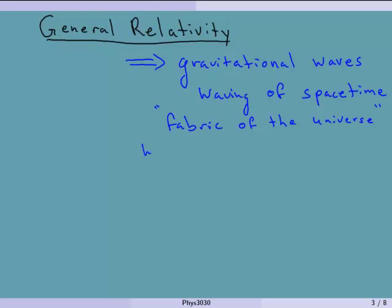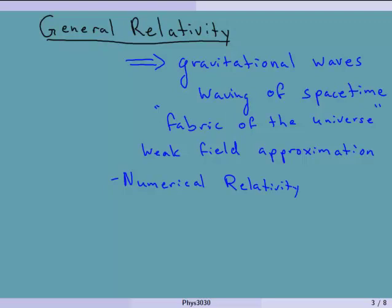This is a weak field approximation — we're really looking at waves far away from sources. There's been a lot of work in a field called numerical relativity to understand what different types of sources produce. We might have a black hole and a neutron star orbiting each other — chaotic systems. As they orbit and I go forward in time, they give off waves, wave fronts.